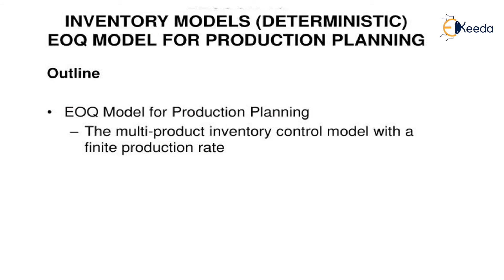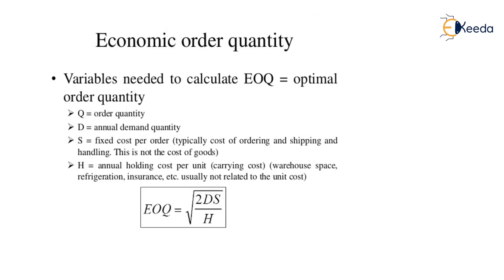Based on these assumptions, we start with the inventory model. This deterministic inventory model — the Economic Order Quantity (EOQ) model — generally depends upon the multi-product inventory control model with a finite production rate.